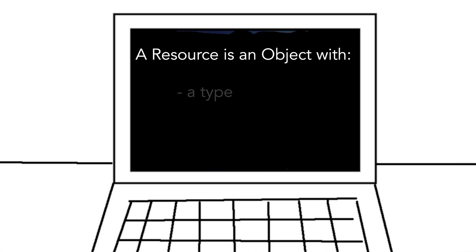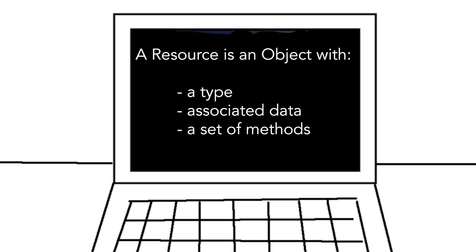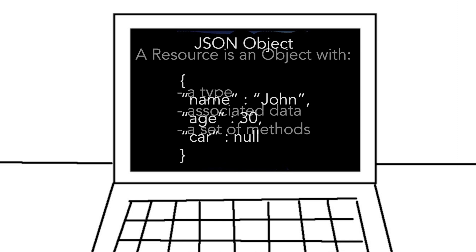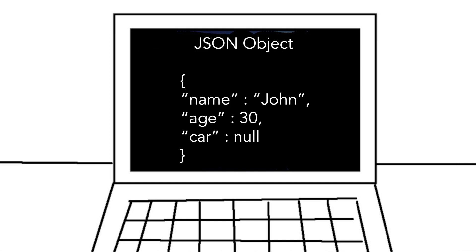A resource is an object with a type, associated data, and a set of methods that operate on it. It is similar to an object in an object-oriented programming language. JSON objects can be a representation of a resource and look, for example, like this: John age 30 and Carl null.